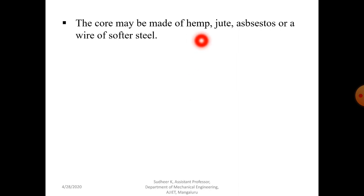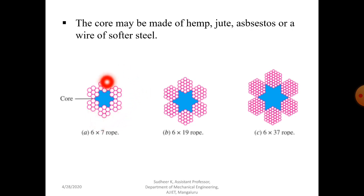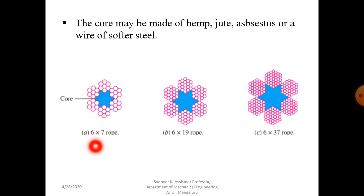The core may be made up of hemp, jute, asbestos, or a wire of soft steel. For example, a 6 cross 7 rope means six strands — you can count one, two, three, four, five, six — and seven indicates the number of wires in each strand. So six into seven rope: this is one of the important constructions of wire rope.